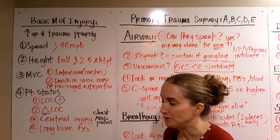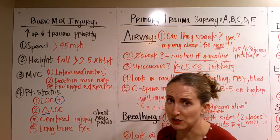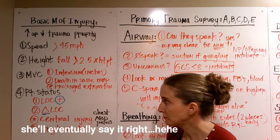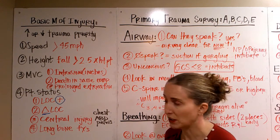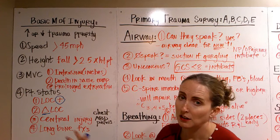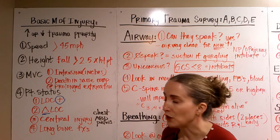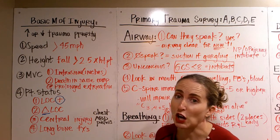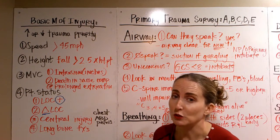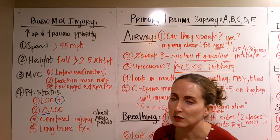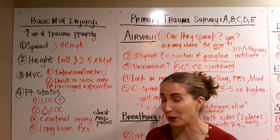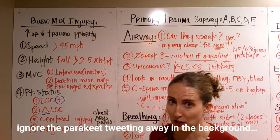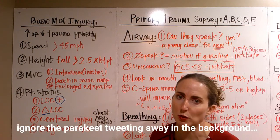Greater than 45 miles an hour, or if they fell two and a half times their height, or depending on how much intrusion there is on the outside of the car — how far the car got crunched. If you have a death of someone in the same compartment as you, you are a trauma patient. It doesn't matter if you're talking, walking, breathing totally fine — you need a trauma workup, because if that person died in the car with you, there was a significant enough mechanism that it killed one person, so we have to consider what it could have done to everyone else.